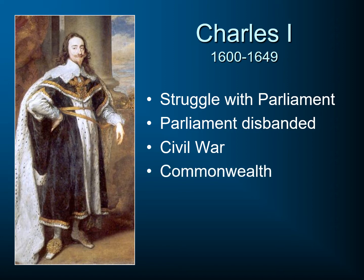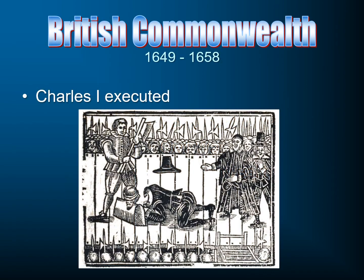As a result, we're going to see England going into the period known as the Commonwealth, where they're going to have no king. Charles himself is executed — instead of a bunch of people dying, now it's one person. The king loses his head.